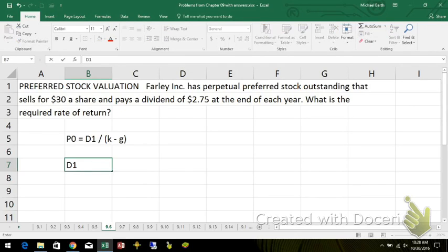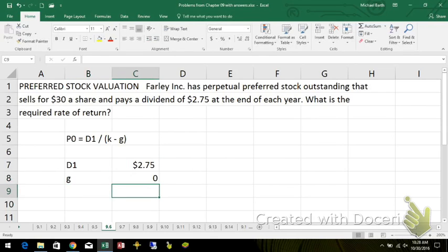What I have is it pays a constant dividend of $2.75, the growth rate is zero or zero percent. It's a constant growth rate and the price today is $30 per share.